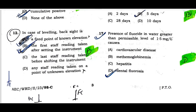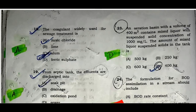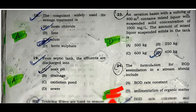Question number seventeen: Presence of fluoride in water greater than the permissible level of 1.5 milligrams per liter causes dental fluorosis. Option D is the correct one. Question number eighteen: The coagulant widely used for sewage treatment is ferric chloride. Option A is the correct one.